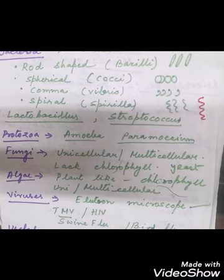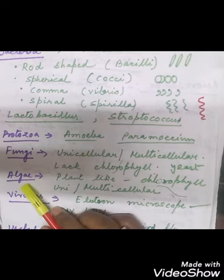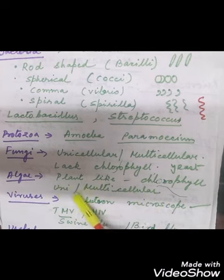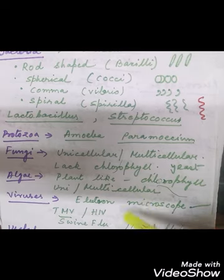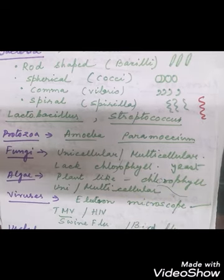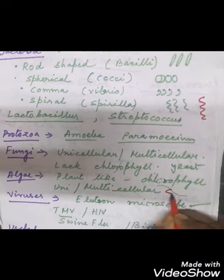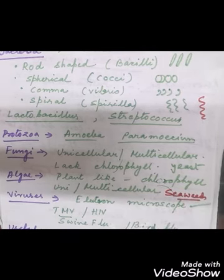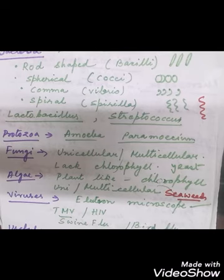Algae are plant-like and they have chlorophyll. They can be unicellular or multicellular. Unicellular algae include Chlamydomonas, while multicellular algae include seaweeds.